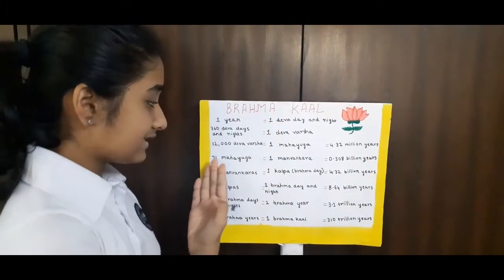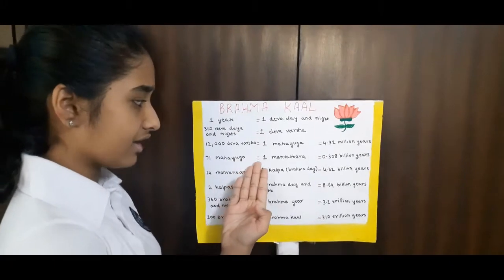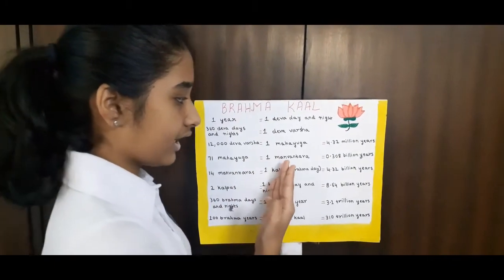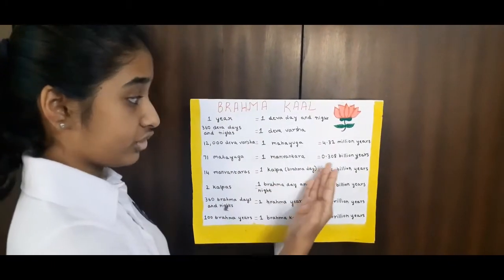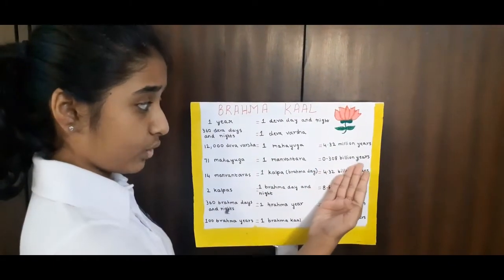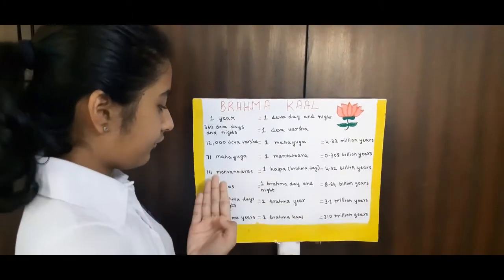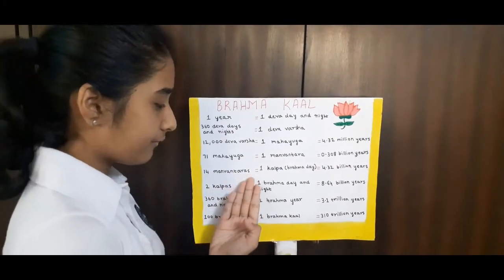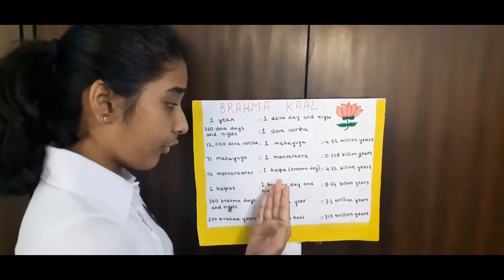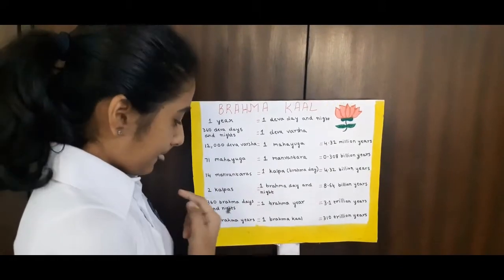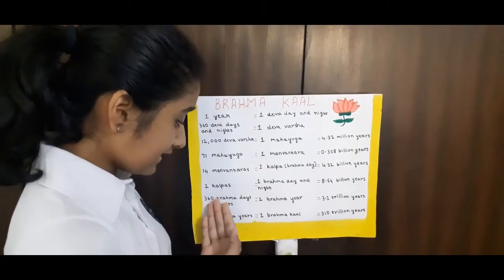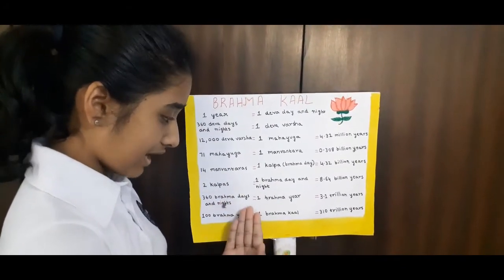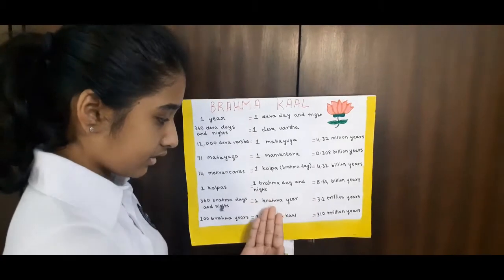And 71 Maha Yugas should pass to form 1 Manvantara, which is 0.308 billion years. And 14 Manvantaras should pass to form 1 Brahma day. And 360 Brahma days and nights should pass to form 1 Brahma year.